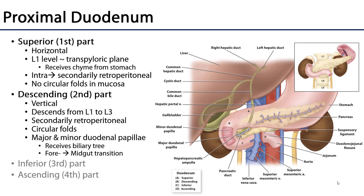The duodenum is a C-shaped organ which is preceded by the stomach and succeeded by the jejunum of the small intestine. In fact, the duodenum is the first part of the small intestine. The duodenum consists of four parts, which are numerically enumerated and named, and they can also be named by their relative positions.